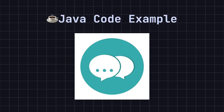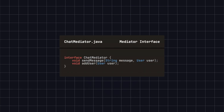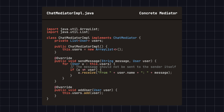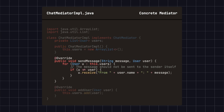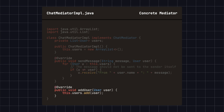To better understand this pattern, let's implement a simple chatroom program in Java using the mediator pattern. First, we define an abstract mediator interface, ChatMediator, that includes methods for sending messages and adding users. Next, we define a concrete mediator class, ChatMediatorImpl, that implements the ChatMediator interface and manages a group of users. The SendMessage method sends messages to all users, and the AddUser method adds users to the chatroom.